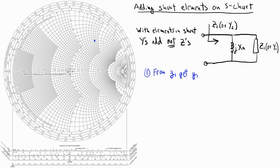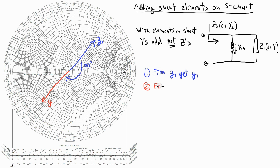Let's say my Z1 point is right there, and that's my gamma 1 vector. We know that in order to find Y1, I have to rotate Z1 by 180 degrees, and the magnitude stays the same. So now I'm drawing the Y1 vector, and at this point I switched from the Z chart, where I plotted Z1, to the Y chart, where I plotted Y1.